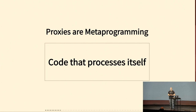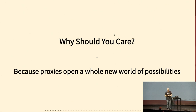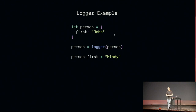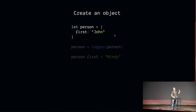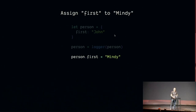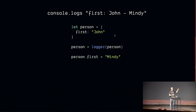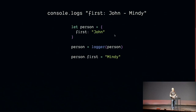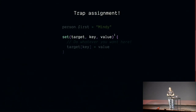You should care because proxies open up a whole new world of possibilities in JavaScript. A quick logger example — kind of the first hello world of proxies — is you get your object and then you create a function that returns a proxy. You set a property on that object, and the magic is that this simple example could log to the console that 'first' changed from John to Mindy, even though there's no console.log anywhere. The way you do this is with a set trap — a method where you make that assignment and that method traps what's happening.